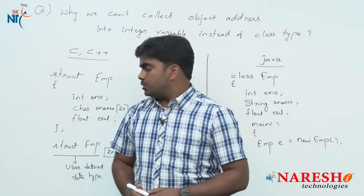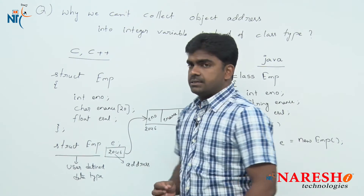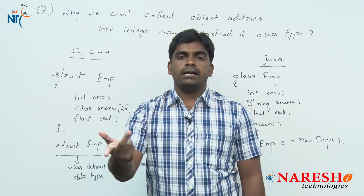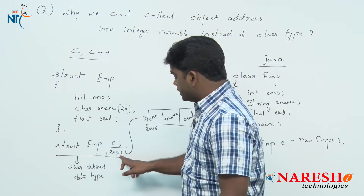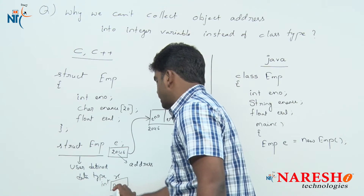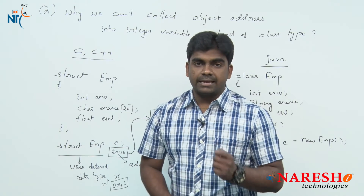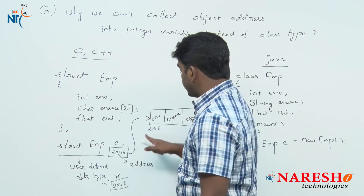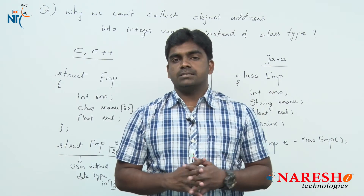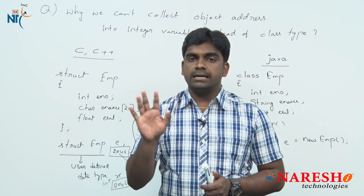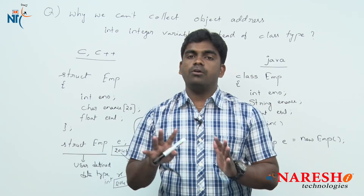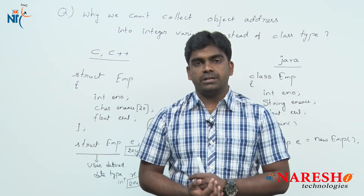You said the address is an integer — yes, it is. But just imagine collecting that address into an integer variable like 'x'. Later, when you want to process 'x', you will get confused: is 'x' an integer data value or is it the address of a memory block? That is the problem. That is why integers are different and pointers are different — integer variables hold data, pointer variables hold addresses — even though both are in the form of integers internally.